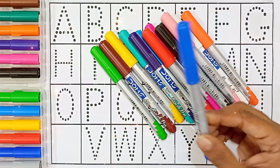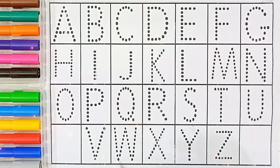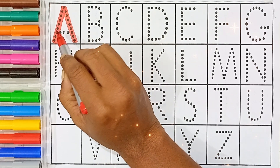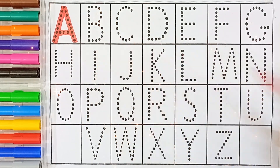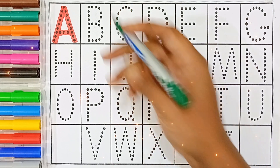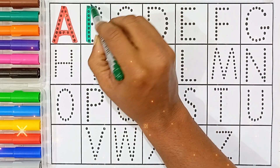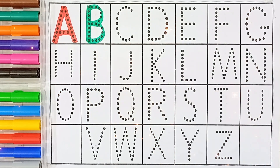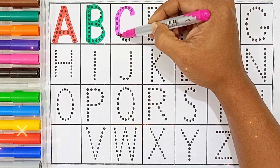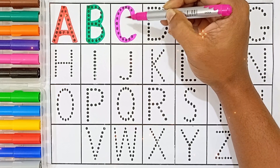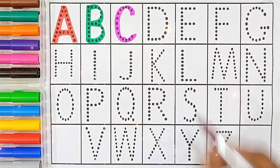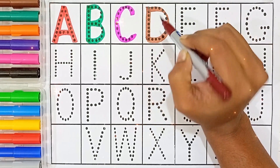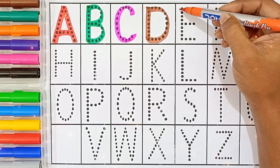Capital letter A — A for apple. A ke baad kya aata hai? Capital letter B. Capital letter C — C for cow. C ke baad kya aata hai? Capital letter D — D for dog.